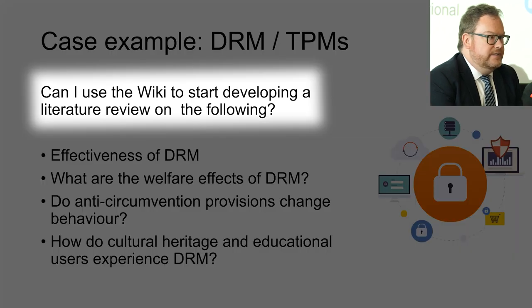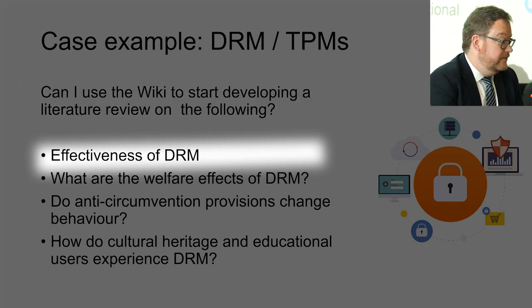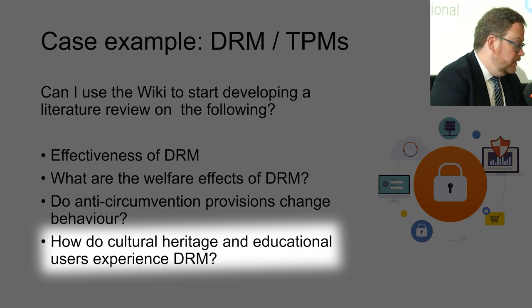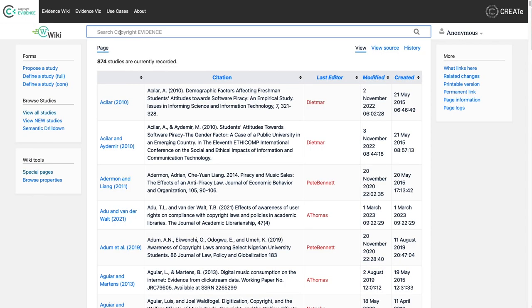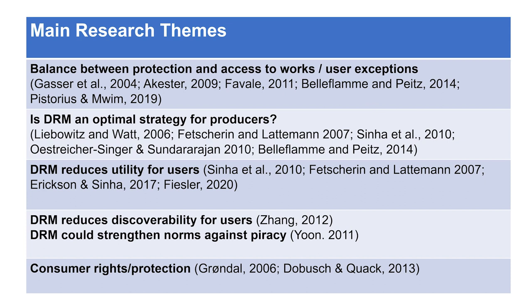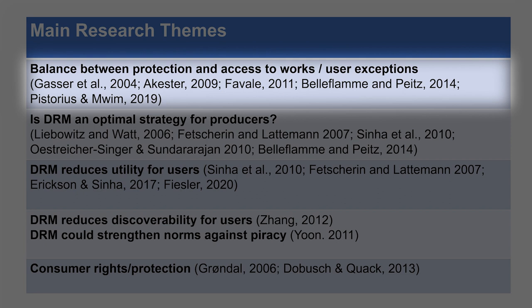I'm going to use the example of DRM — digital rights management — or technical protection measures, which is something I'm currently working on. I asked: can I build a literature review on these questions? Are DRMs or TPMs effective? What are the welfare effects of DRM? How do cultural heritage and educational users experience DRM? If we search 'DRM' in the wiki search bar, we find there are currently 24 empirical studies dealing with digital rights management — either in the title or abstract — indexed in our wiki.